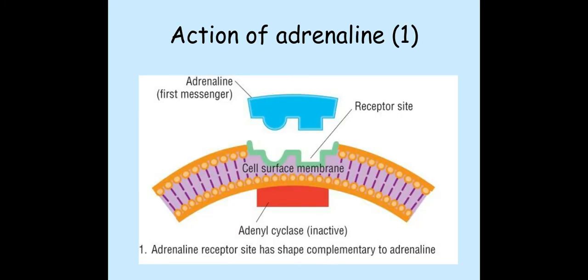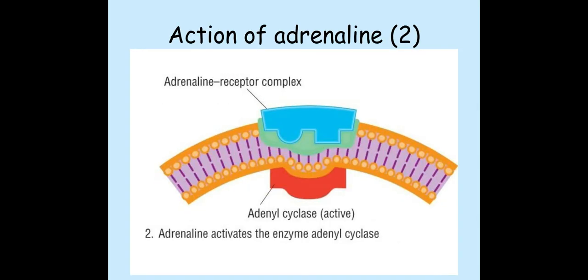So for the first messenger and second messenger response — in this particular example we have the hormone adrenaline. The hormone, no matter what it is, is the first messenger, and I have seen that come up a couple of times in the exam. This hormone will have a complementary and specific shape to the receptor on the cell surface membrane of its target cell. So adrenaline, as our first messenger, will bind to the receptor because it has a complementary and specific shape to that receptor.